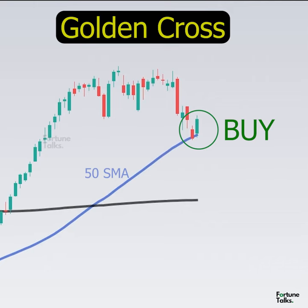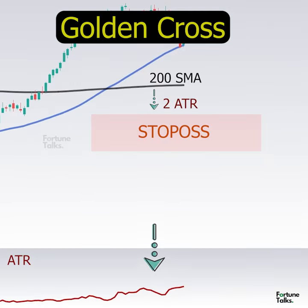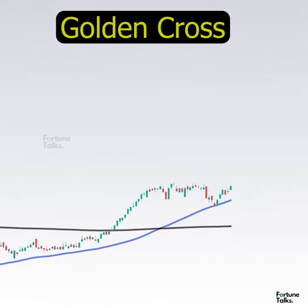Look to buy when the price is above the 50-SMA and price retests back to the 50-SMA and then moves higher with high trading volumes. The stop loss can be placed 2 ATR below the 200-SMA.